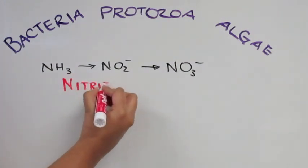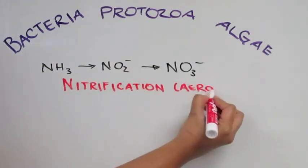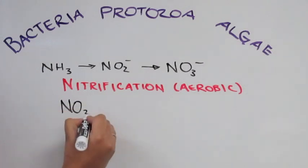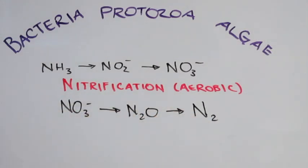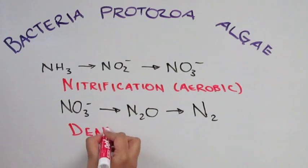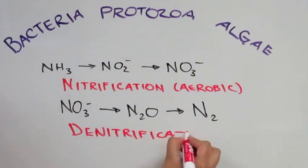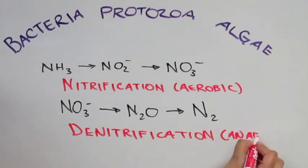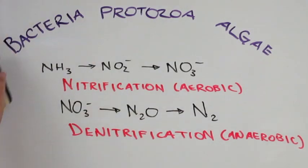For example, nutrient removal is mainly done via nitrification and denitrification processes in which the ammonia is oxidized to nitrate by nitrifying bacteria under aerobic conditions and nitrates are broken down into nitrogen gas under anaerobic conditions. In this way, excess nitrogen levels in wastewater can be managed.